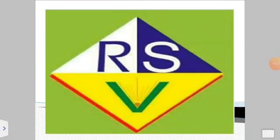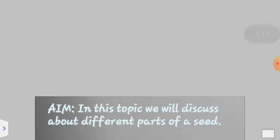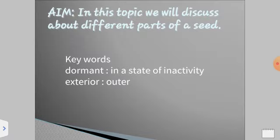Namaste dear children. Welcome to your new class, Standard 5. This is the first chapter of your science textbook. The name of the chapter is Germination of Seeds. The aim of the topic is to study about different parts of a seed. The keywords in the chapter are 'dormant,' meaning a state of inactivity, and 'exterior,' meaning outer.